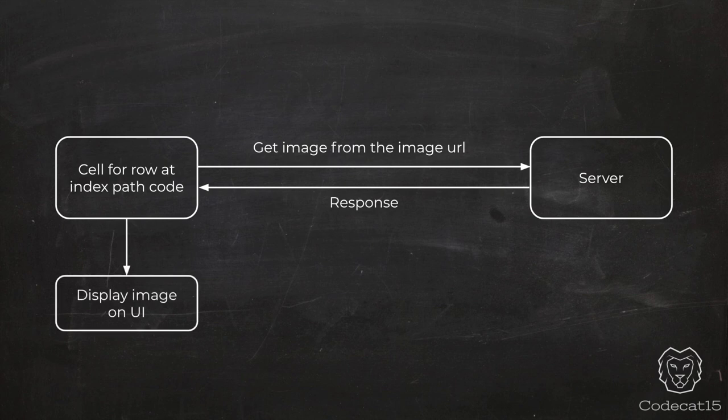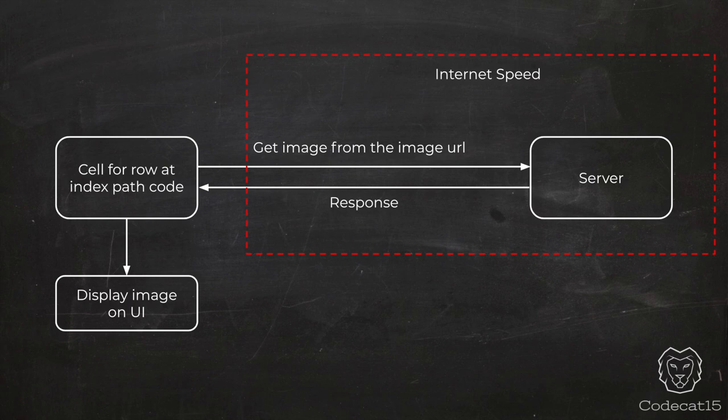The table view is taking time because internet speed matters when downloading images. If the internet is slow, it can take more time. Also, if one image is 10MB and another is 2MB, the 10MB image will take longer to download. Due to network speed or image size, the table view pauses — how many seconds depends on the network speed and the size of the image you're trying to display.